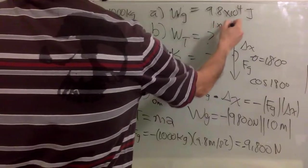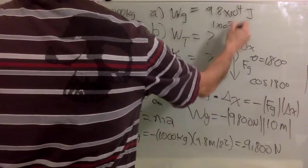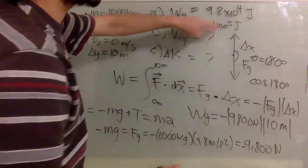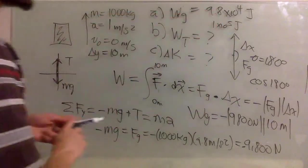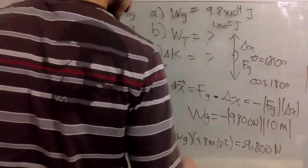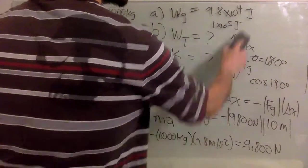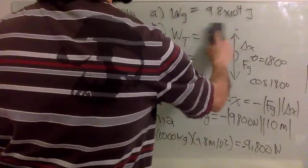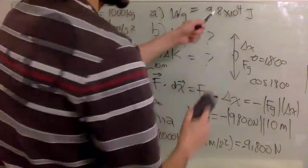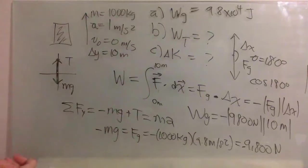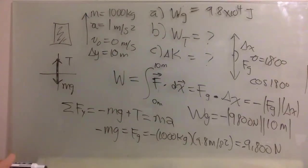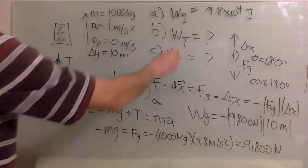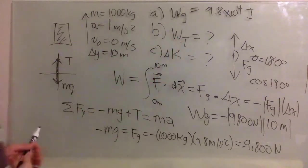The answer given in the problem is 1 times 10 to the 5 joules, which is pretty close — rounding up — but our value of -9.8×10⁴ joules is more exact. Now let's do the whole thing again but for the tension.